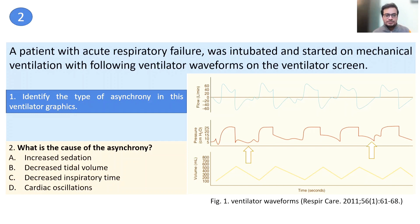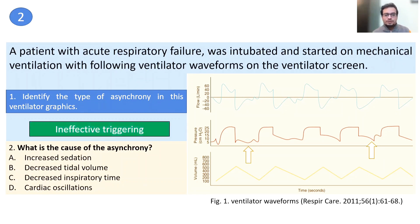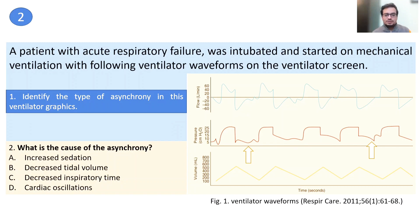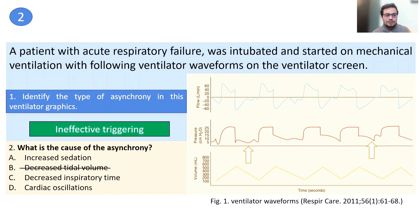Again, there are missed triggers as you can see on the pressure waveform. What could be the reason for these ineffective triggers? The most common causes of ineffective triggering are decreased expiratory time, prolonged expiratory time, auto-PEEP, and large tidal volume. Decreased tidal volume cannot be the answer because more tidal volume means more inspiratory time, which causes ineffective triggering — so that is not the answer. Decreased expiratory time and cardiac oscillations are also not the answer. The correct answer is increased sedation.